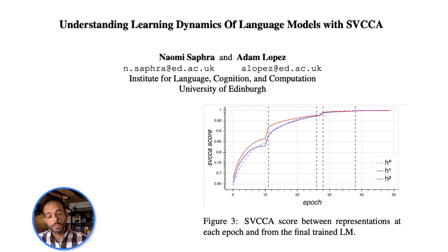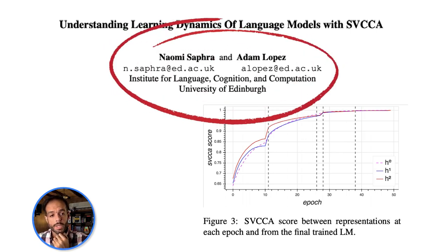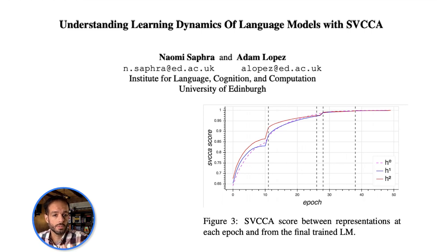This is by no means limited to computer vision. Safra and Lopez work on showing how that works for NLP models, RNNs in this case. This is a model going through training as a language model, kind of like GPT models, trained on text to predict the next word for 50 epochs. You have two layers, two LSTM layers.